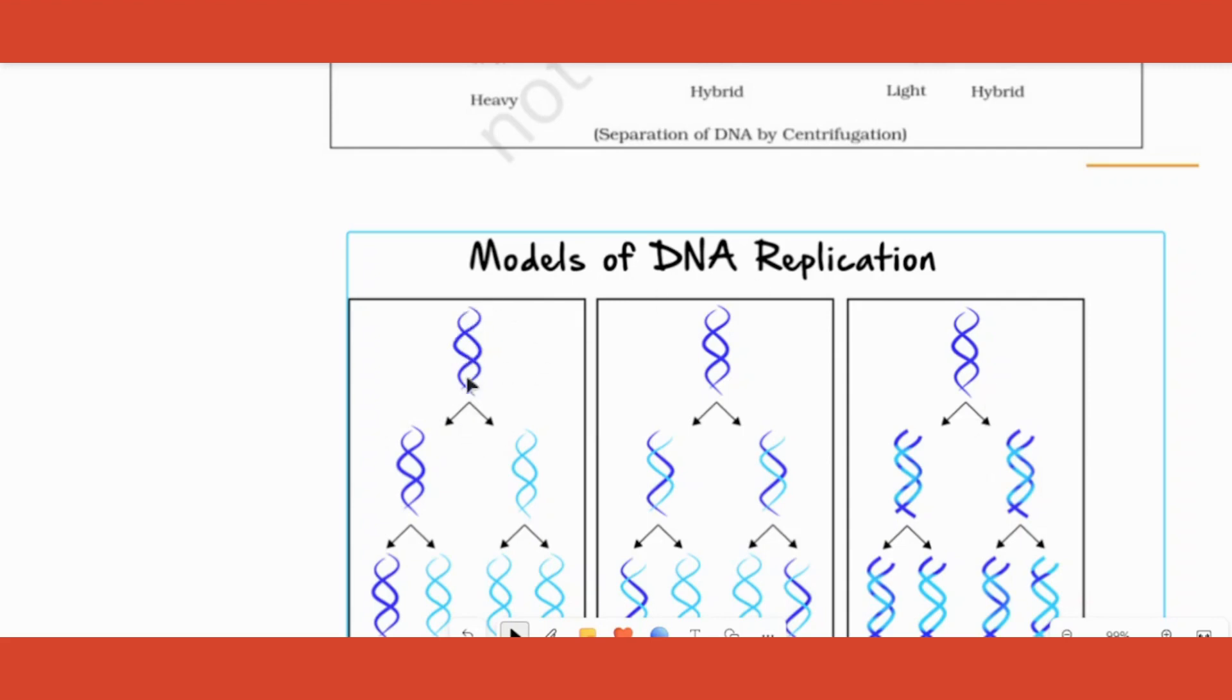From one single DNA molecule, as you can see this is the parent molecule, from which you will get two daughter molecules. The first molecule remains as such and a new molecule, completely new, is produced. That is called the conservative model.